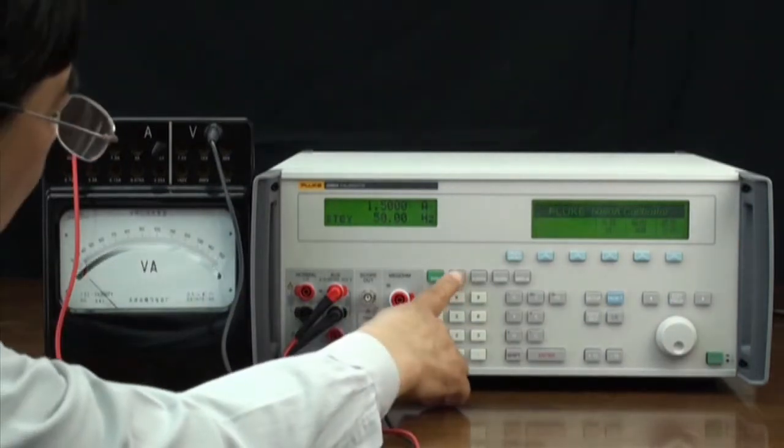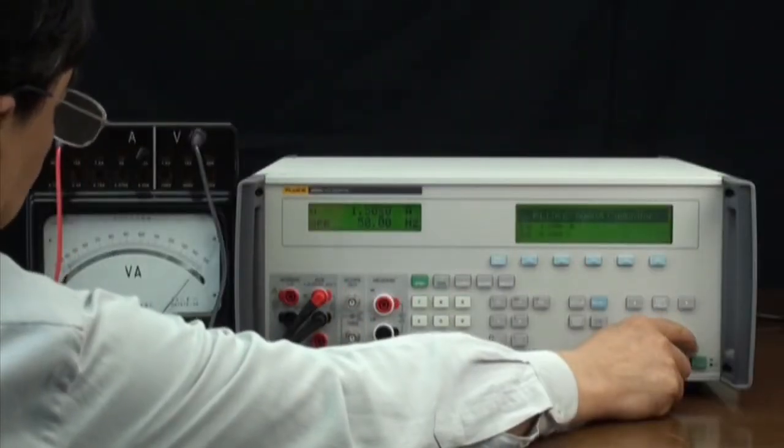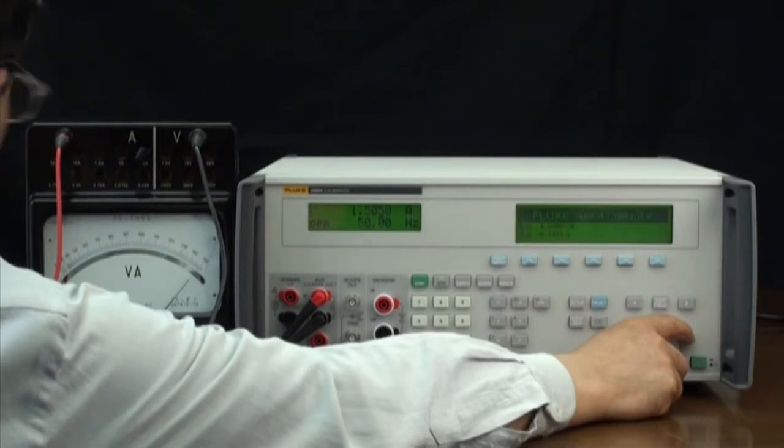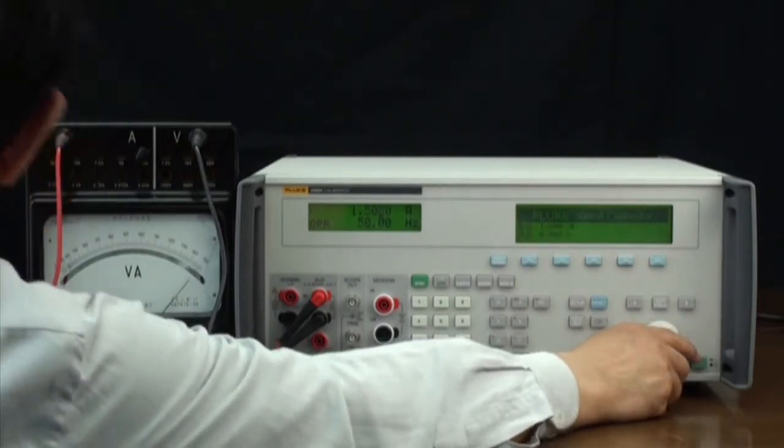Next, press the operate key to output. Examine the test results. Turn the knob to adjust the 5080A's output and set the analog meter to read exactly 1.5 amps.